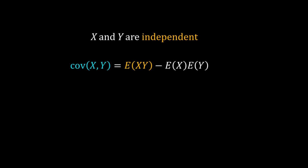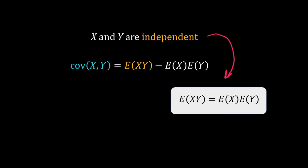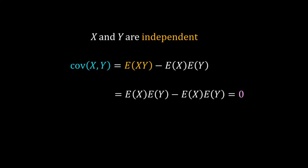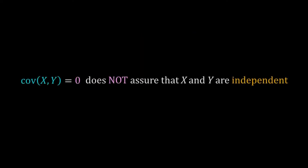But what will happen when two variables are independent? When X and Y are independent we know that expectation of XY equals expectation of X times expectation of Y. Substituting that in makes the covariance equal to zero. So when two random variables are independent their covariance is zero. But here is a catch: the opposite is not true — a zero covariance does not assure independence.